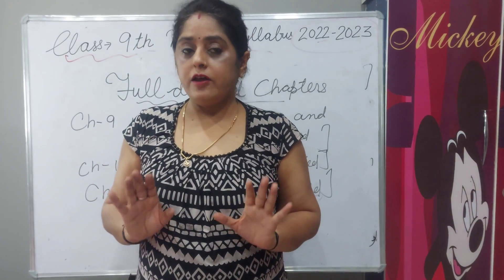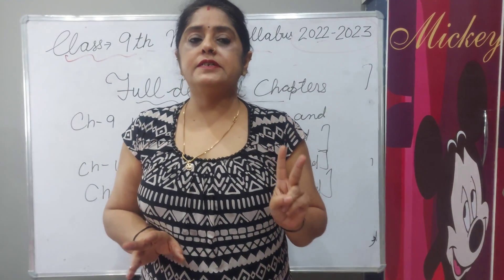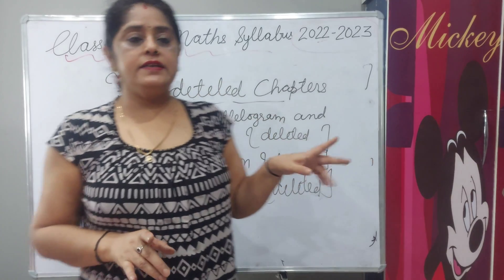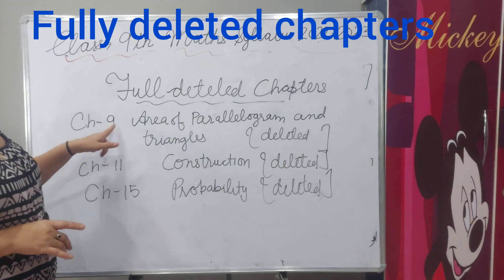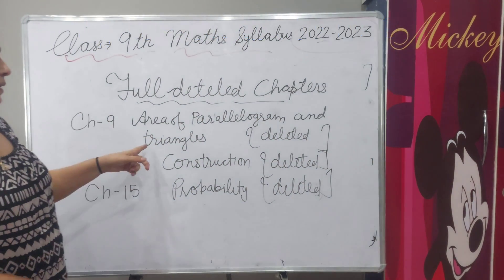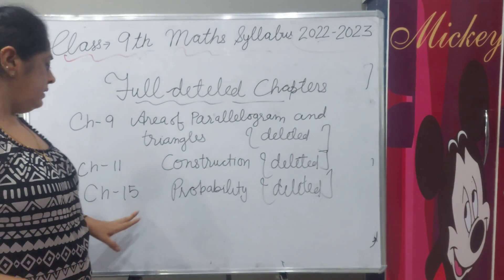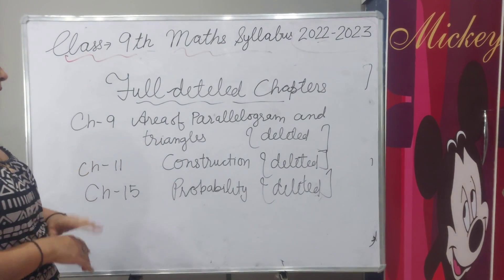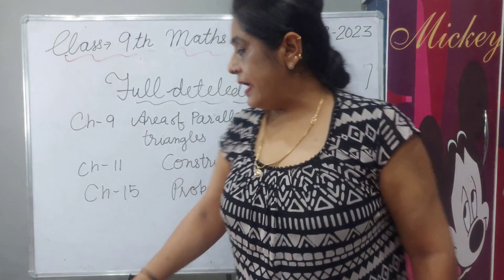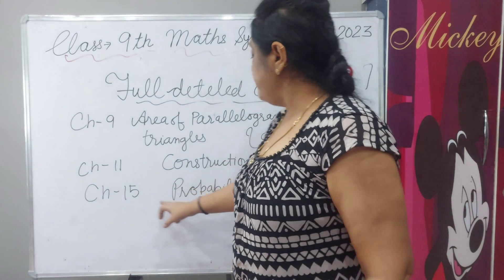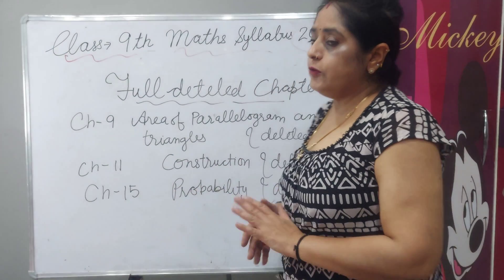Some chapters are fully deleted — there are 3 chapters. Chapter 9, area of parallelograms and triangles, deleted fully. Chapter 11, constructions, deleted fully. And chapter 15, probability, deleted fully.